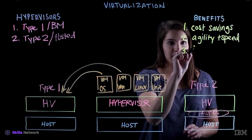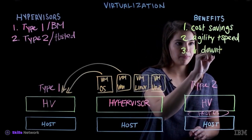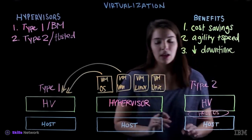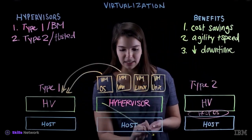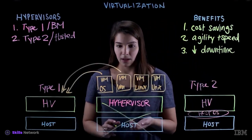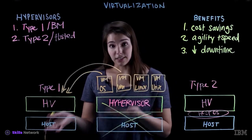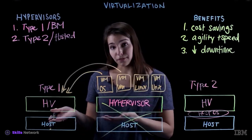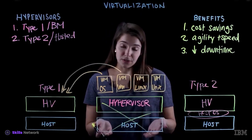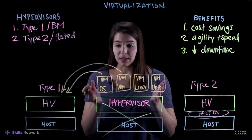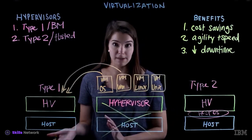And three: lowers your downtime. So let's say that this host goes out unexpectedly. The fact that you can move virtual machines from one hypervisor to another on a different physical server means that you have a great backup plan in place. So if this host goes down, you can simply move your VMs very quickly to another hypervisor on a machine that is working.